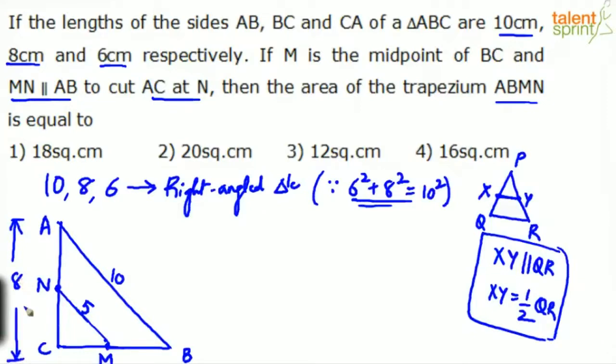Complete is 8. So if this is 8 and N is the midpoint, this side must be 4 and this side also should be 4. Similarly, BC will be the third side 6. Total is 6. Total BC is 6. And M is the midpoint. So this side has to be 3 and this side has to be 3.